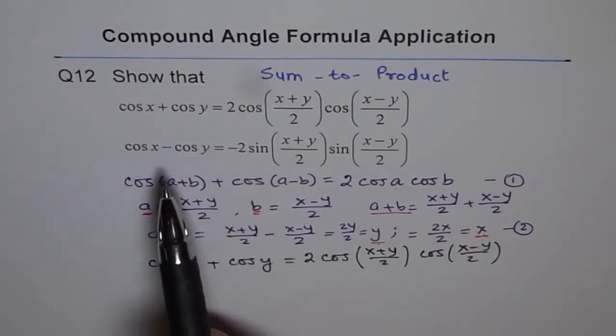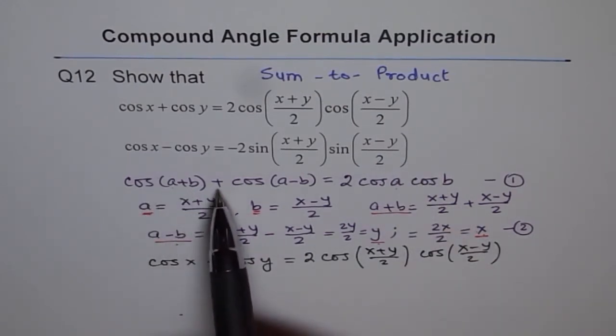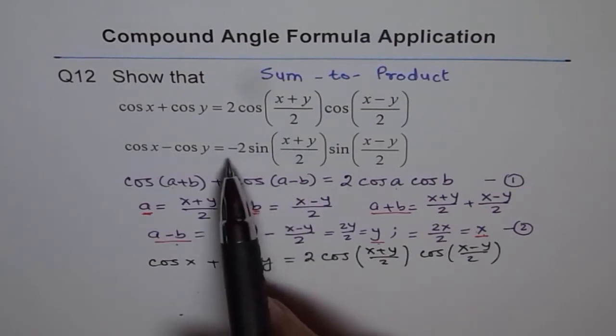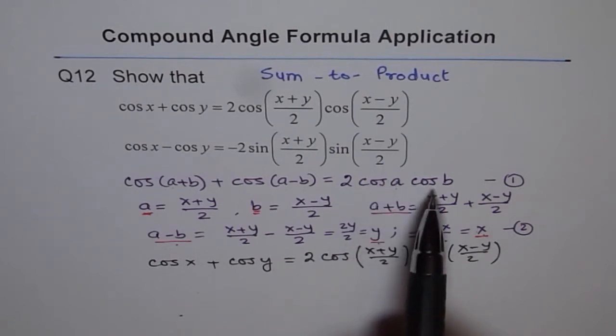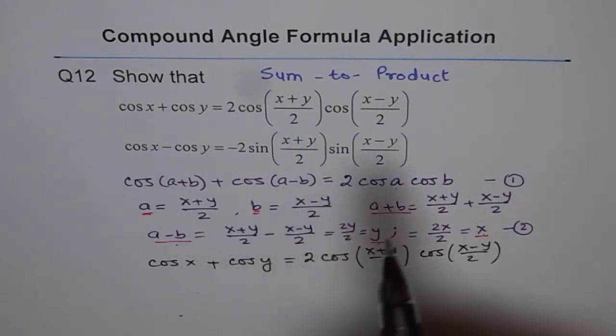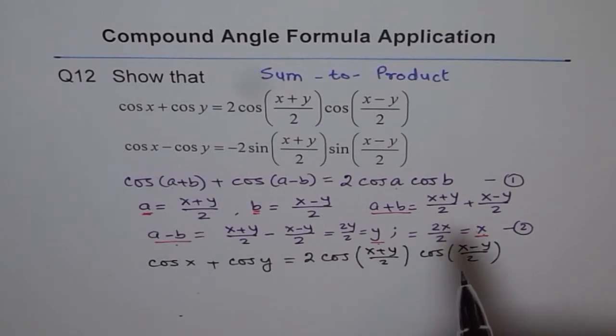So the starting point for the second will be cos a plus b minus cos a minus b, which is equals to minus 2 times sine a sine b. And then once you do the substitution, you get your result. So these are actually formulas and they can be used in identities and in many solving equations involving compound angles.